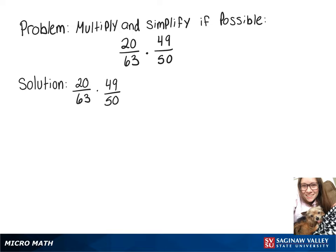In this video, we're going to do 20 over 63 times 49 over 50. So on top we're going to have 20 times 49, and on the bottom we'll have 63 times 50.